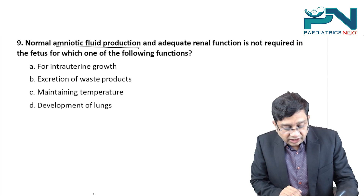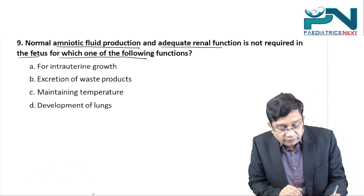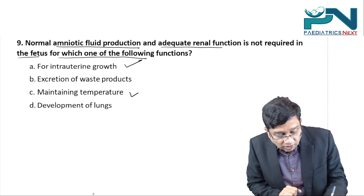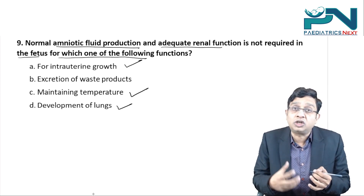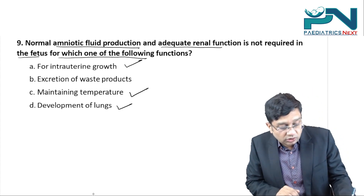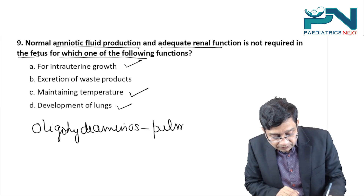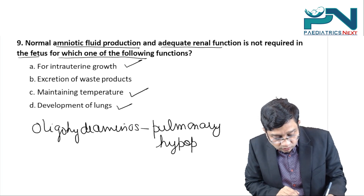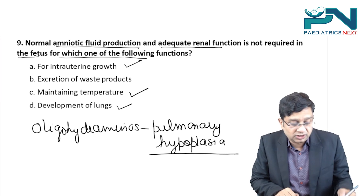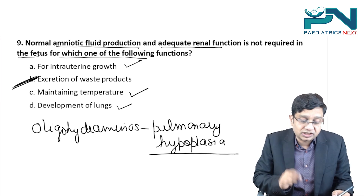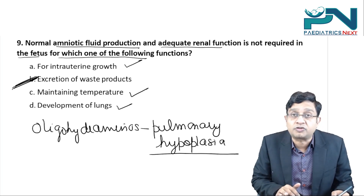Question nine: normal amniotic fluid production and adequate renal function is not required for which of the following? Amniotic fluid is required for intrauterine growth, maintenance of temperature, development of lungs — the most common cause of death in oligohydramnios is pulmonary hypoplasia — and it protects the fetus from traumatic injury. However, amniotic fluid is not required for excretion of waste products.